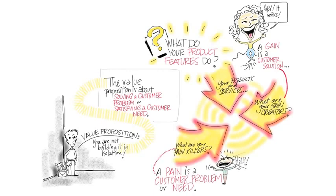Alexander Osterwalder, when he drew the Business Model Canvas, really emphasized this. It's not just about your product. And especially if you come from a technical background, it's really easy to focus on all these features. But if you find yourself doing that, you need to complete the sentence and say, yes, but here's what we make people be able to do better, and here are the problems we solve for them.